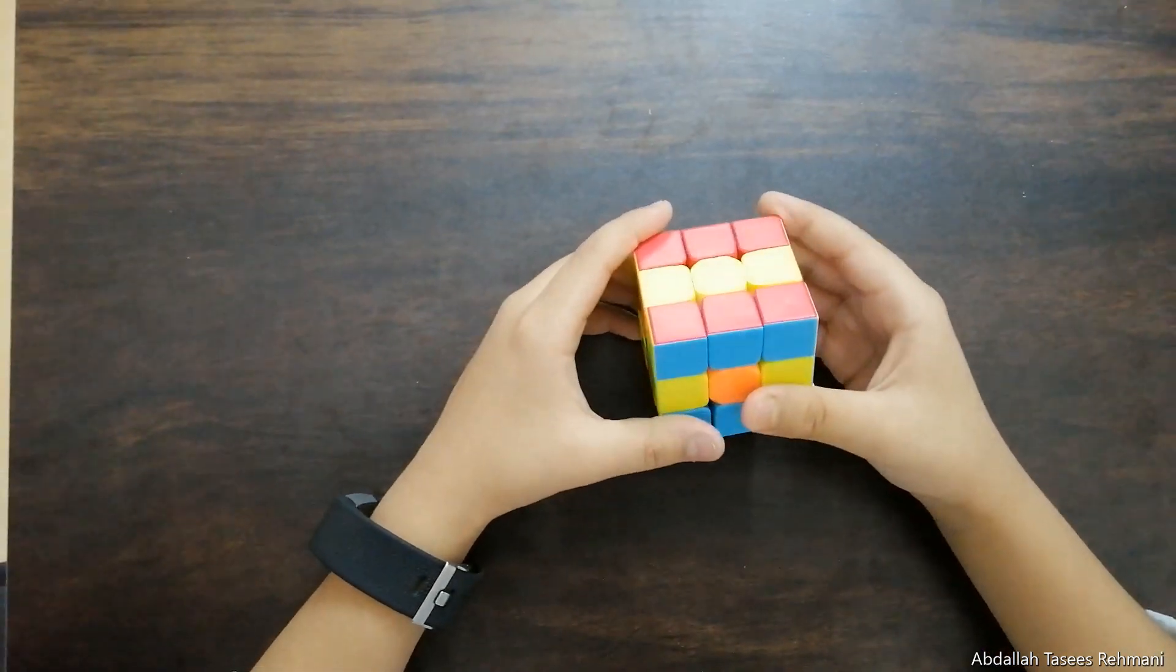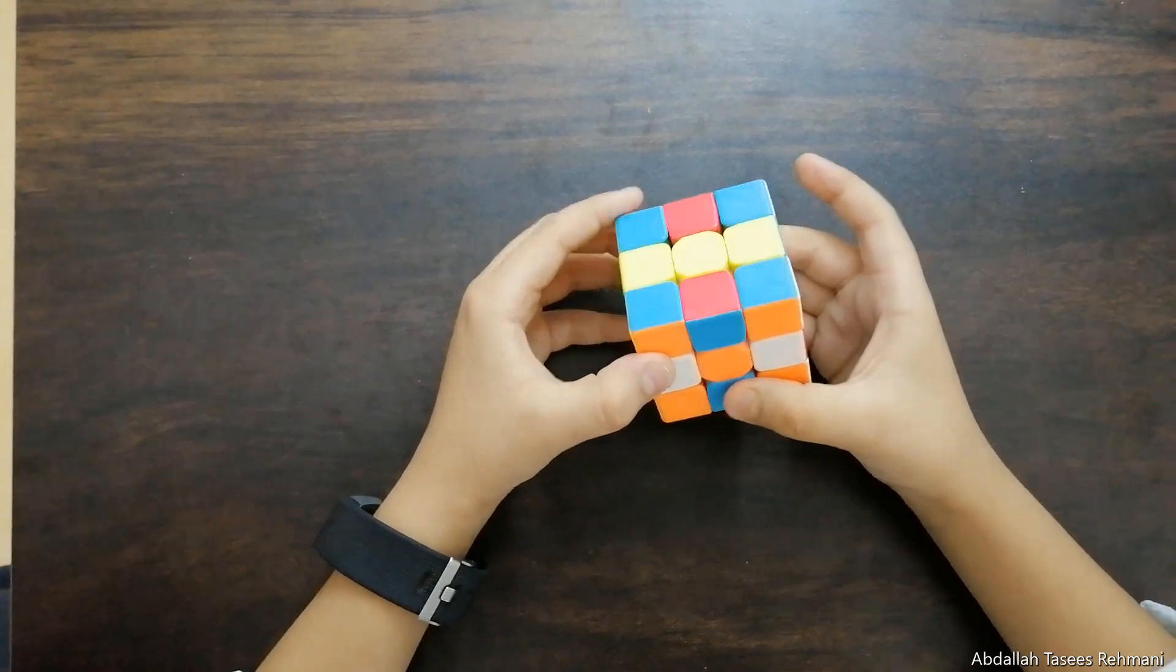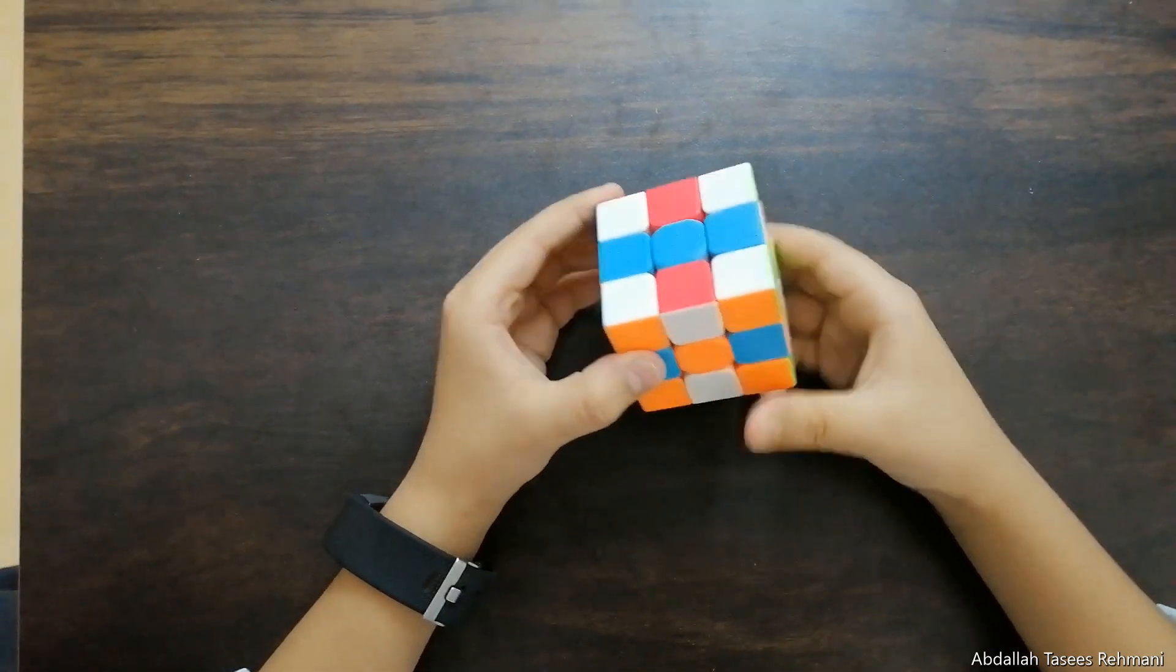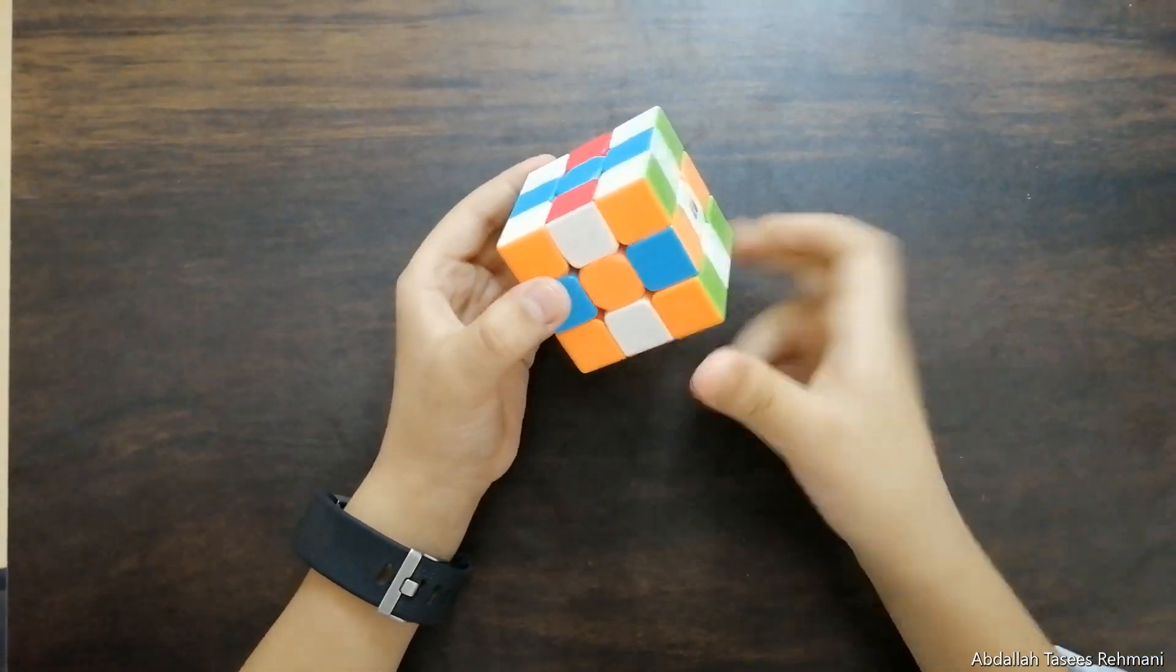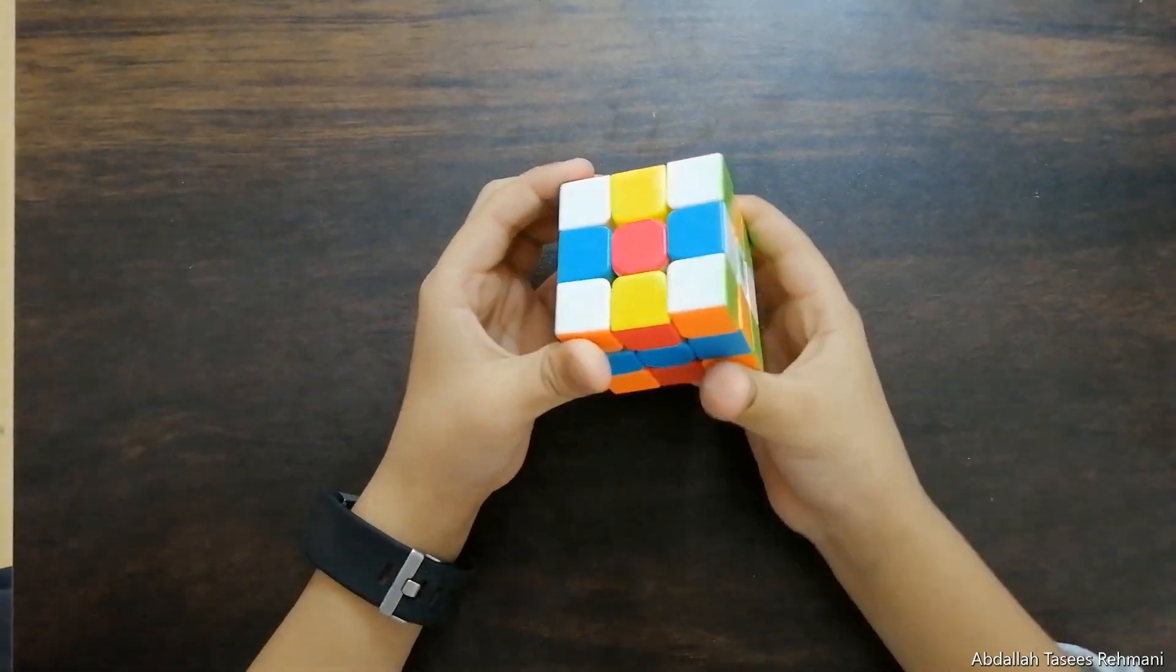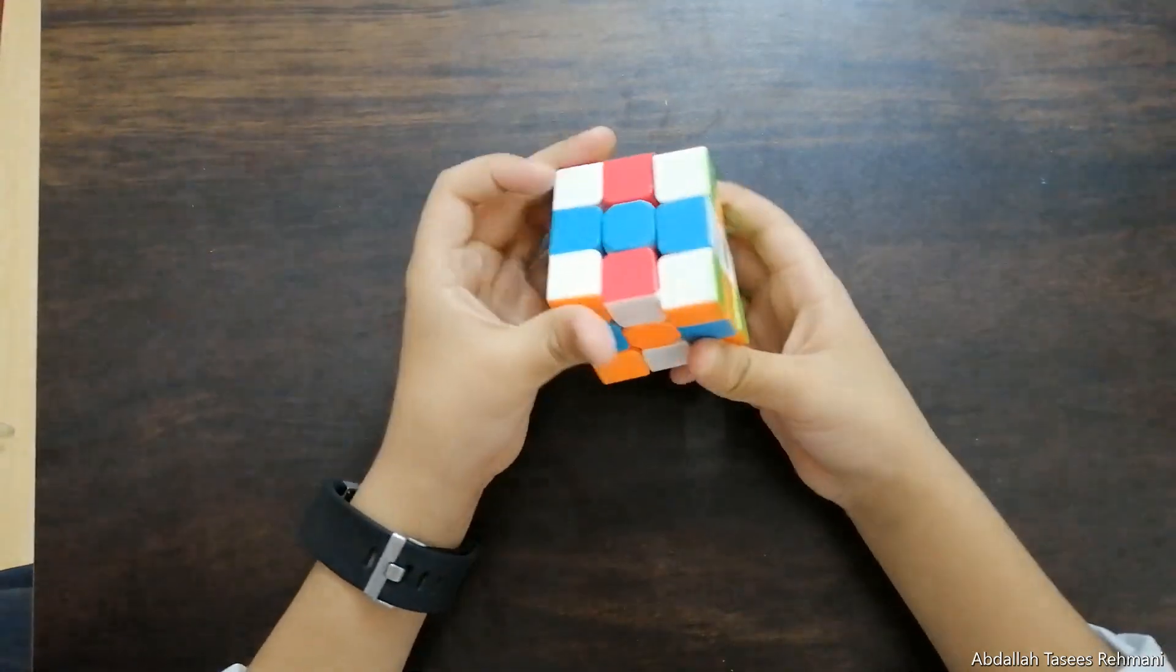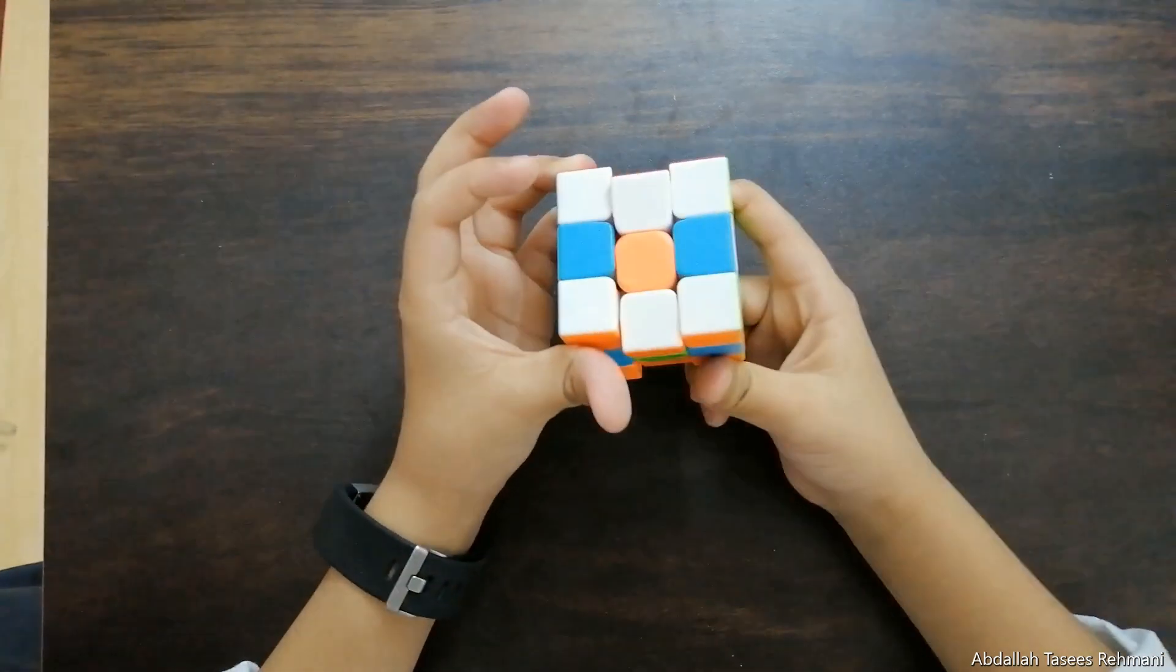Now turn the cube like this. Do R L dash. Now turn the cube like this, and just this middle finger, turn it like this. Or you can turn it most of the times. It won't be like I had it here. It would be like here.